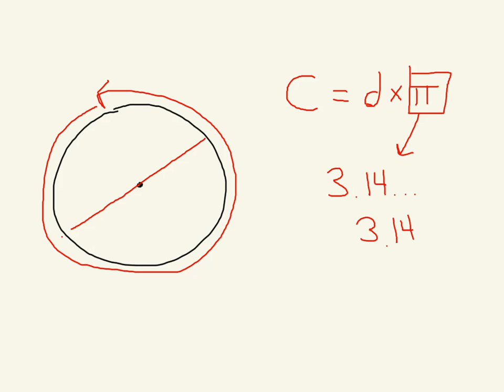So we've got a formula that allows us — if we have the diameter of a circle — to find the circumference very simply by multiplying by pi. We can also work the other way: if we know the circumference, we can find the diameter. We're going to show an example of each of those.